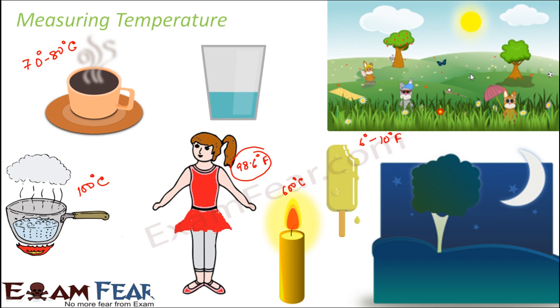If you compare the temperatures of day and night, there also you will see a lot of difference. Maybe the temperature during the daytime is somewhere around, say it might be around 30 to 35 degrees Celsius. The temperature at night could be around 25 degrees Celsius or so.